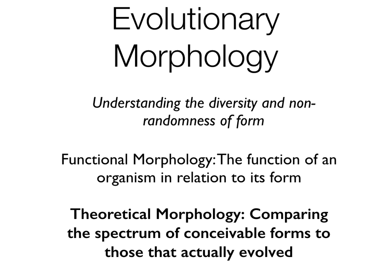Okay, the second kind of evolutionary morphology we'll be talking about is theoretical morphology, which is where we compare the spectrum of conceivable forms to those that actually evolved.